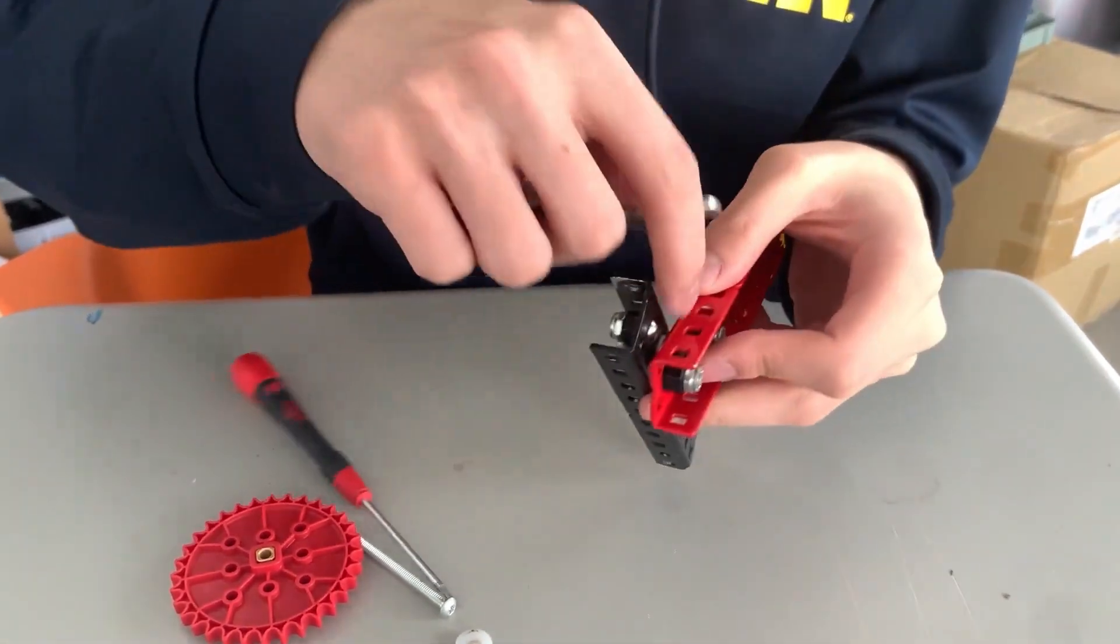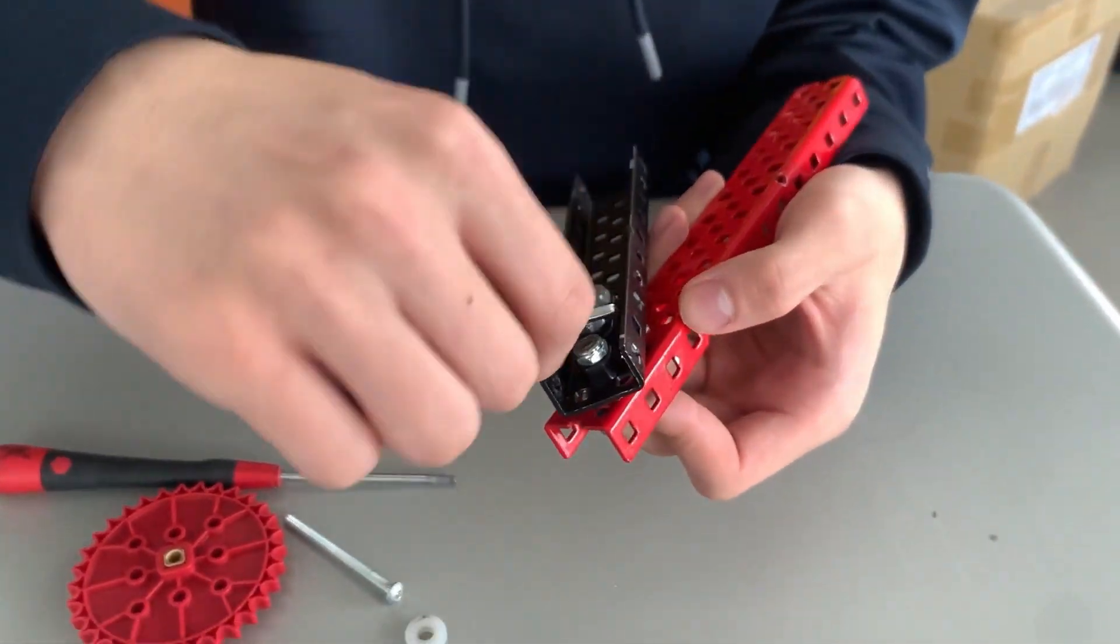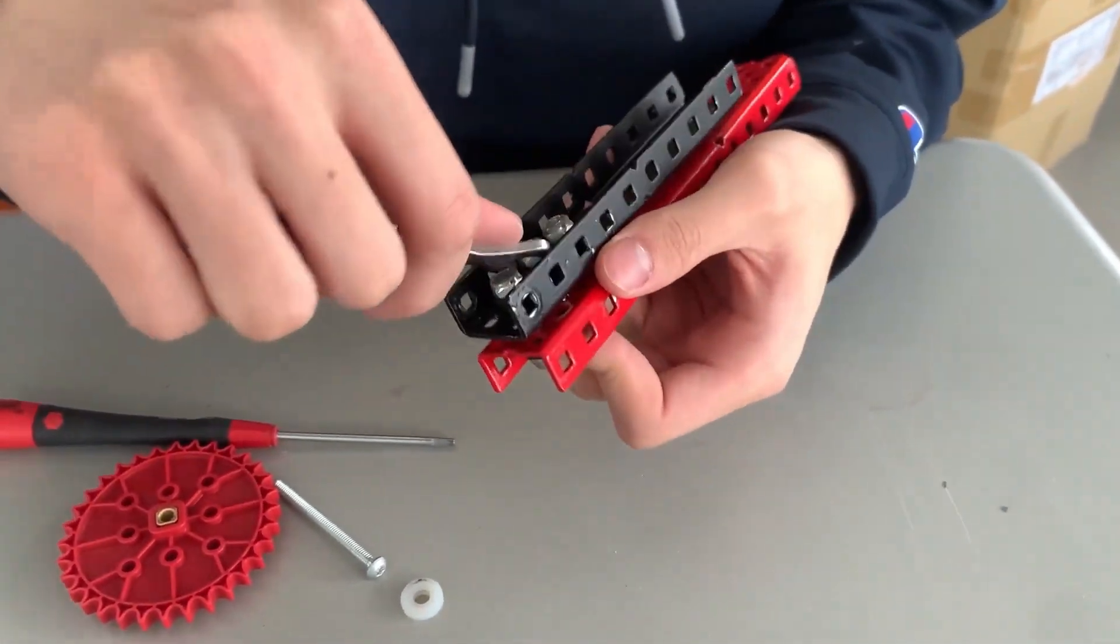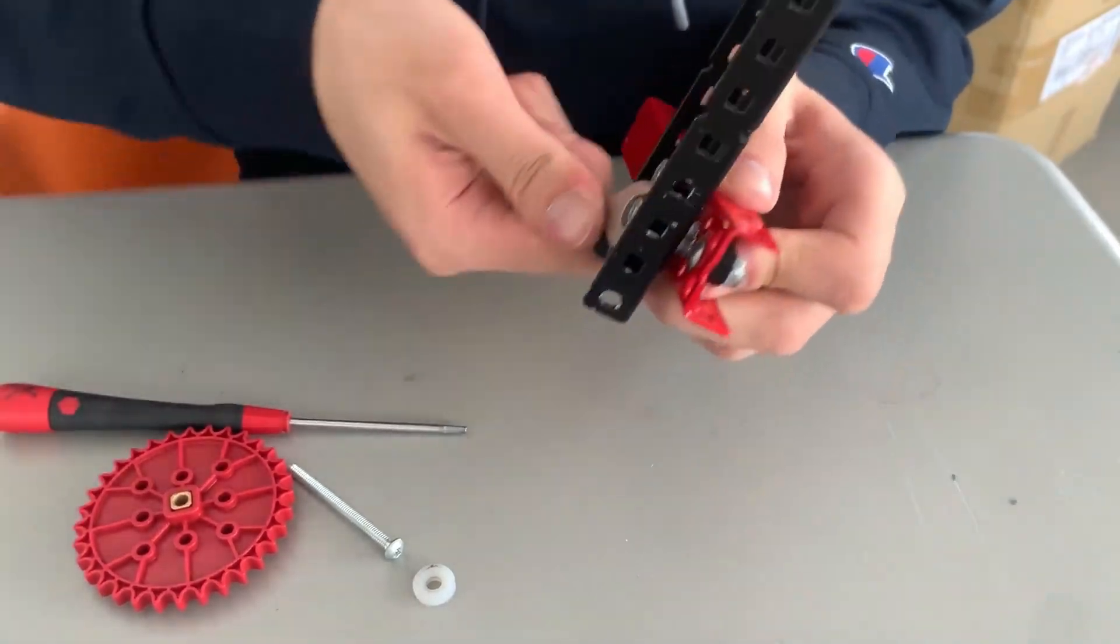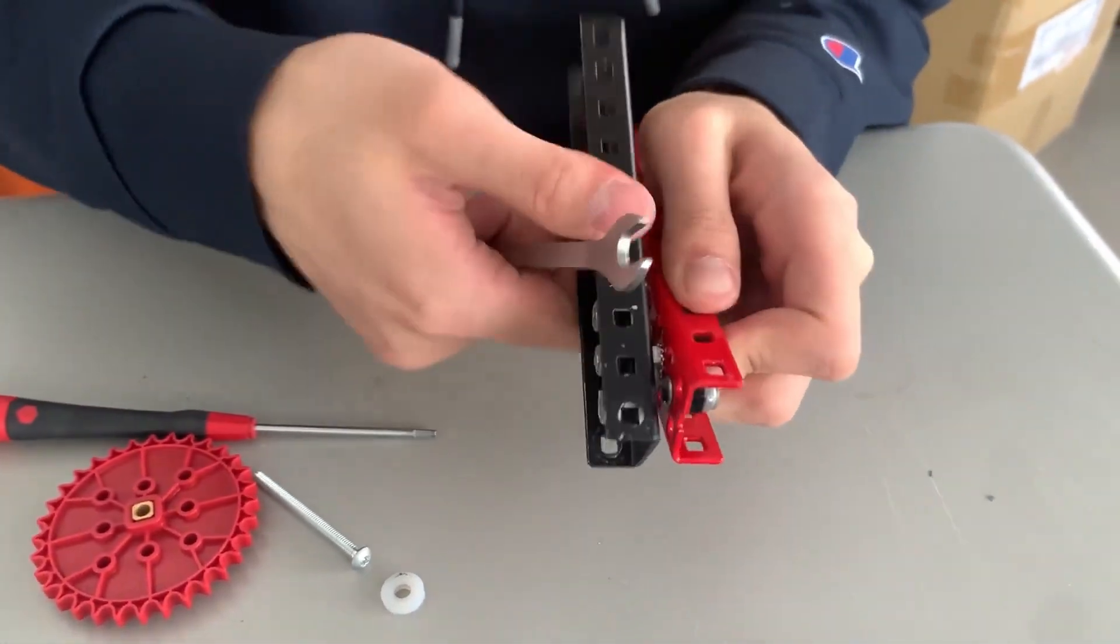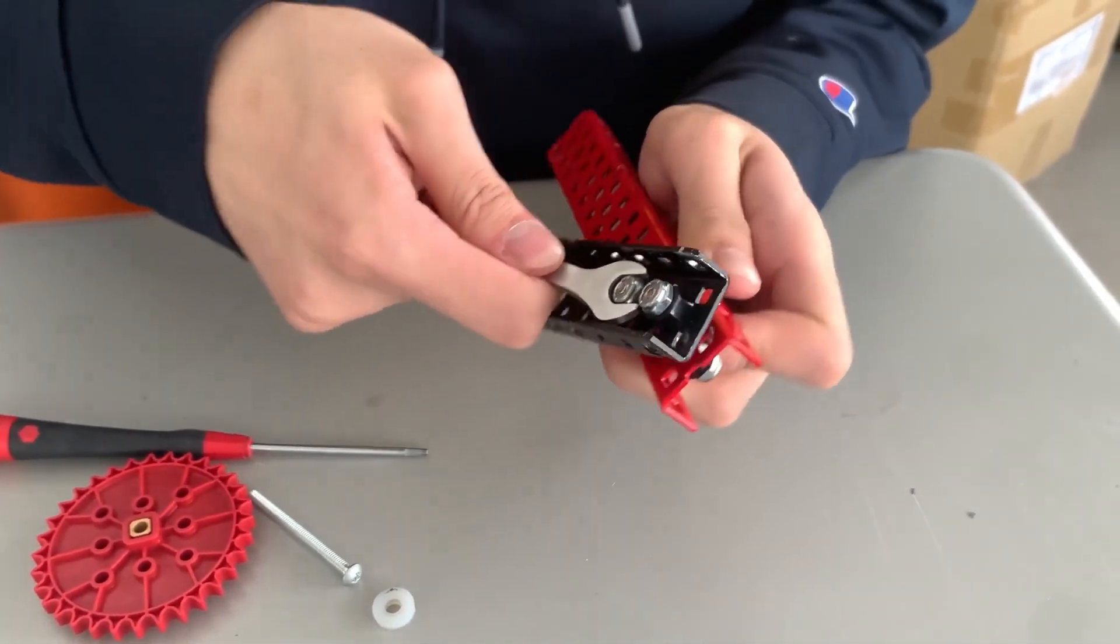Now, since the screw is completely constrained by this cap nut over here, you'll want to just use a wrench to tighten it up. You'll want to tighten it up until this here is now tight.